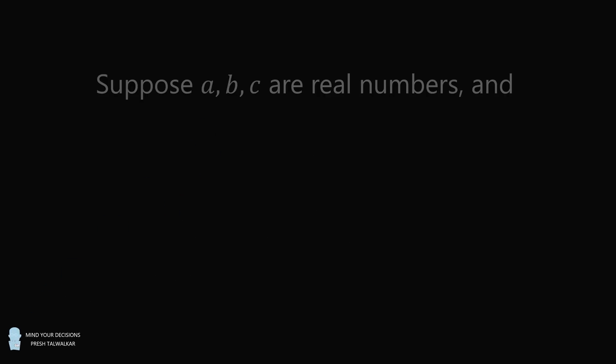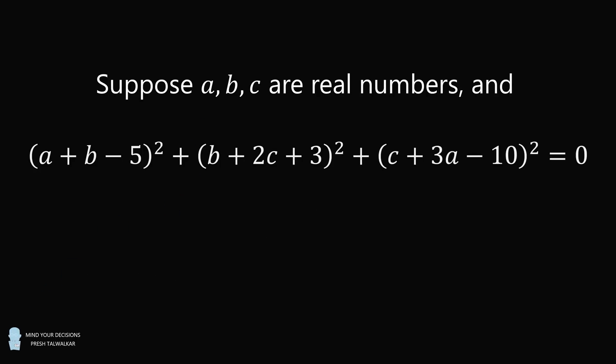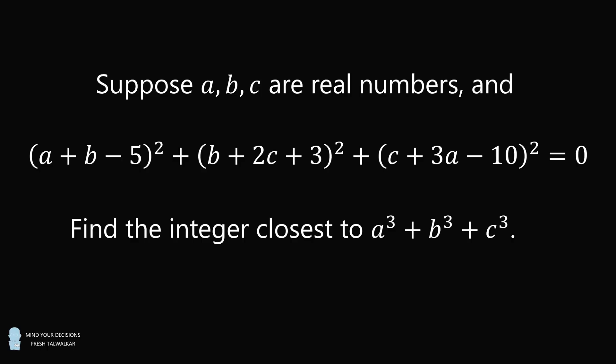Hey, this is Preshto-Walker. Suppose that a, b, and c are real numbers, and the square of a plus b minus 5, plus the square of b plus 2c plus 3, plus the square of c plus 3a minus 10, is equal to 0. Find the integer closest to a cubed plus b cubed plus c cubed.